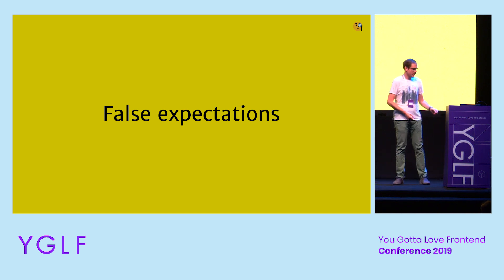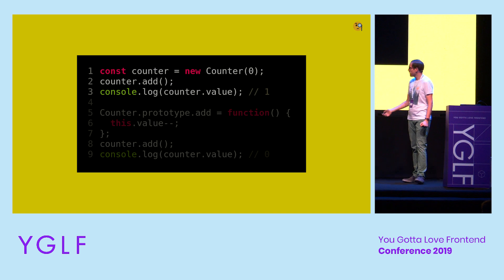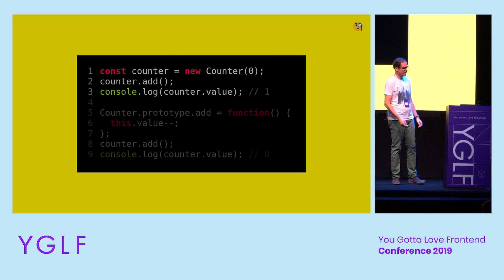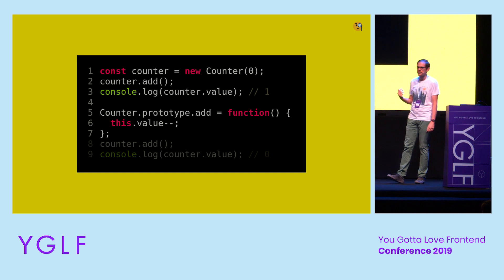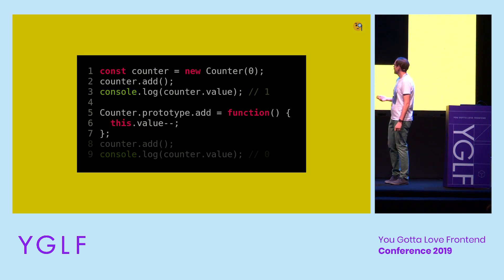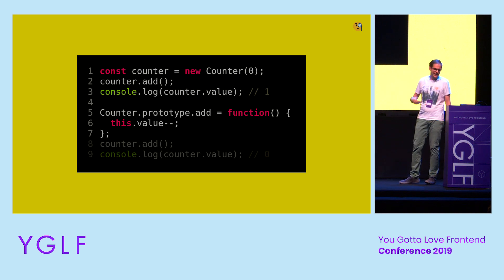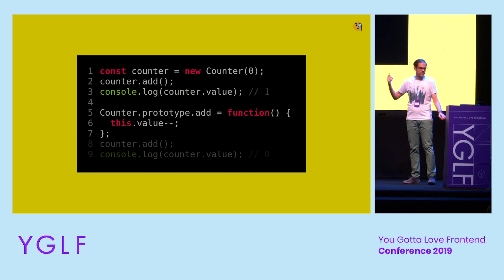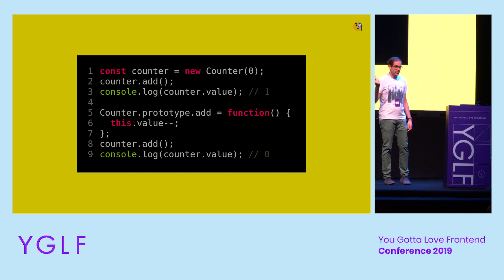Going back to our simple counter example — we can instantiate the counter, call the add method, and the value goes from 0 to 1. But then I can access the prototype right away, because classes are just syntactic sugar over prototypes, so the prototype is right there. I call this a pretty leaky abstraction. And then I can override the method — because prototypes are living objects, if I change the prototype like this, even though the counter instance was created before the change, it is affected anyway. So now calling add actually decrements, because I changed the prototype.